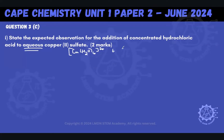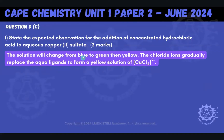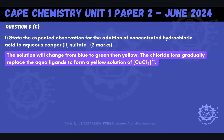We're going to be adding HCl, and what we expect to see is that the solution will change from blue to green, then yellow. The chloride ions gradually replace the aqua ligands — the water ligands — to form a yellow solution of the copper chloride complex. The intermediate green color occurs when water hasn't been fully replaced — it's a mixture of the blue and yellow. Once all ligands have been exchanged, you see yellow.